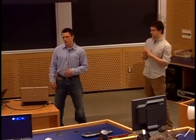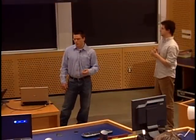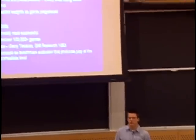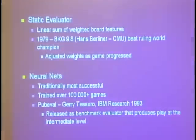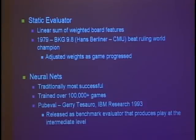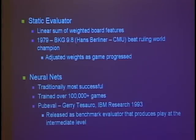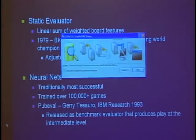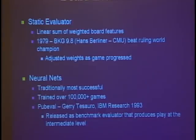The next approach people have used is training neural nets to determine how good a board is, and these have been really successful. They work by basically playing hundreds of thousands if not millions of games against itself, and after about a million and a half games it reaches maximum performance. One such board evaluator is POVAL, released by Jerry Tesoro in 1993. This is the evaluation function we use for our program — he released it as a benchmark so that others in the development community could compare their evaluators against it. It plays at an intermediate to pretty strong level.